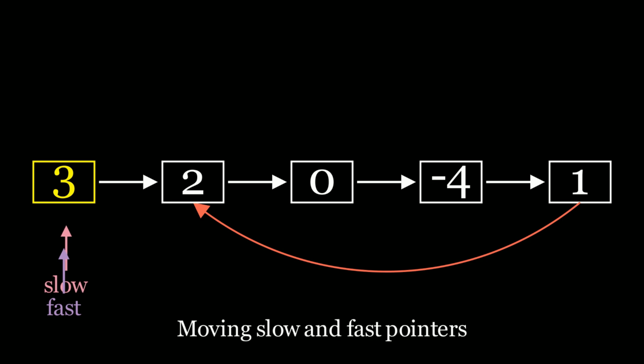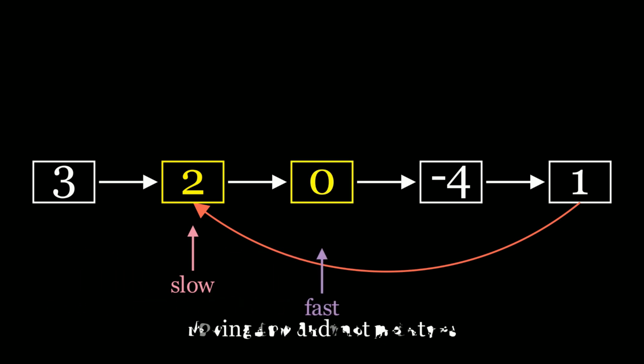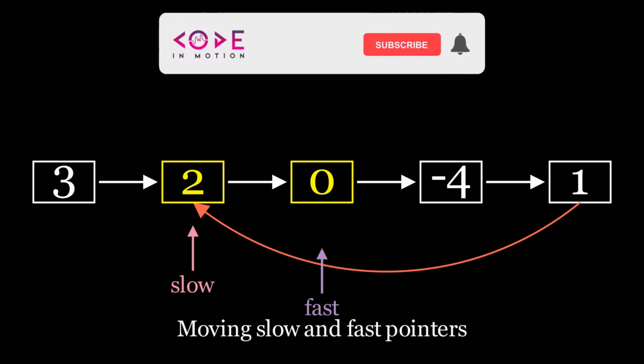Let's see how that looks. We're going to move the slow and fast pointer. Let's move the slow pointer by one and the fast pointer is going to move by two. We're going to continue this process. So the pointers do not meet, so move them again. Slow moves once, fast moves twice.